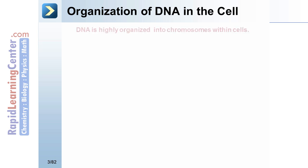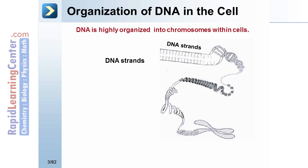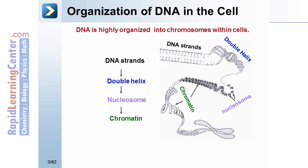DNA is highly organized into chromosomes within cells. Here we see a DNA strand — you can see the base pairing: A, T, G, C. This winds to form a double helix, which binds proteins to form nucleosomes. It further winds and condenses to form chromatin, ultimately forming the chromosome, located in the cell's nucleus.